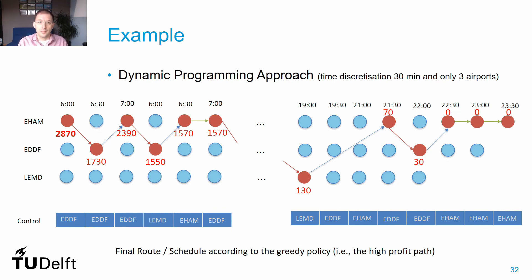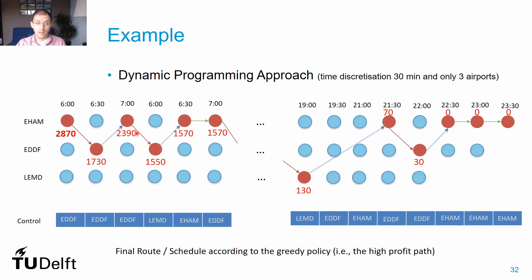This is a Markovian decision process as required for dynamic programming. Decisions are made stage by stage with full system information, and the optimal action and profit are defined regardless of previous actions and states. For instance, being in Amsterdam at 7 am, the decision to fly to Frankfurt is optimal whether we came from Frankfurt in the previous segment or stayed on the ground since 6 am — the profit of 2,390 monetary units holds either way.